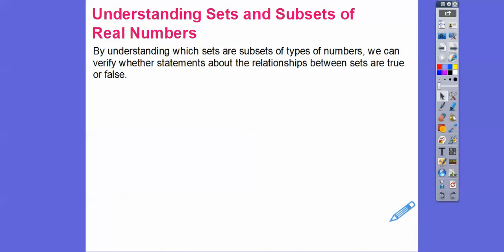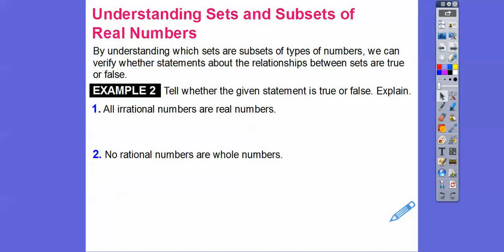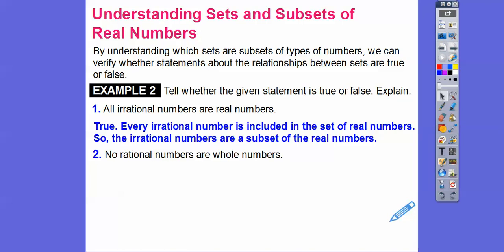By understanding which sets are subsets of types of numbers, we can verify whether statements about the relationship between sets are true or false. For example — all irrational numbers are real numbers. Well, that is true. Every irrational number and every rational number is included in the set of real numbers, so the irrational numbers are a subset of real numbers. If it's true, it's a subset.